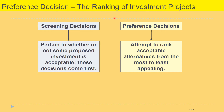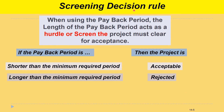Ranking of investment projects using the payback period. First, you have screening decisions, which pertain to whether or not some proposed investment is acceptable. These decisions come first. Usually you have some criteria for preference decisions — the attempt to rank acceptable alternatives from the most to the least appealing. The screening decision rule: when using the payback period, the length of the payback period acts as the hurdle or screen.